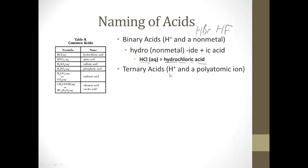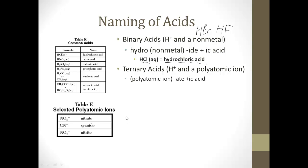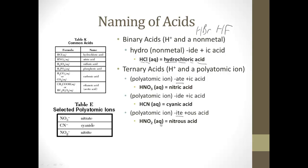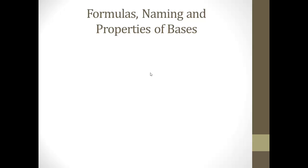Ternary acids, which is an H plus and a polyatomic ion. Here's just a couple of different polyatomic ions from table E. If the polyatomic ion ends in ate, it becomes ic acid. So if we take nitrate, that would be nitric acid. Notice there's no hydro. If the polyatomic ion ends in ide, like cyanide, becomes cyanic acid. If the polyatomic ion ends in ite, like nitrite, it'll become nitrous acid.